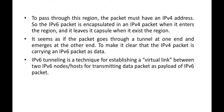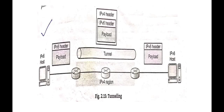IPv6 tunneling is a technique to establish a virtual link — the tunnel is nothing but a virtual link. It is a secure way between two IPv6 nodes. The source host uses IPv6, the destination host uses IPv6, but because the intermediate region is IPv4, we use the tunneling protocol to encapsulate IPv6 inside IPv4.